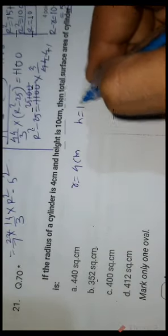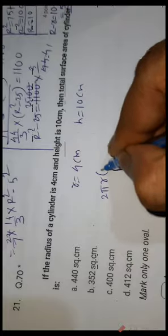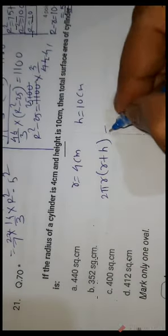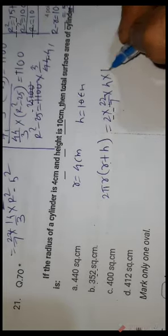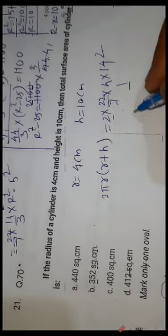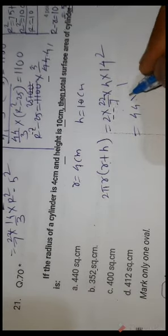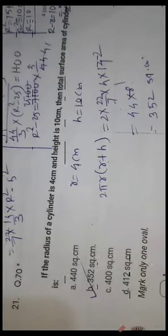Question number 70: radius of cylinder is 4 cm and height is 10 cm. Find the total surface area. TSA = 2πr(r + h) = 2 × (22/7) × 4 × (4 + 10) = 2 × (22/7) × 4 × 14. Simplifying: 7 cancels into 14, giving 2 × 22 × 4 × 2 = 352 cm². B is the correct answer.